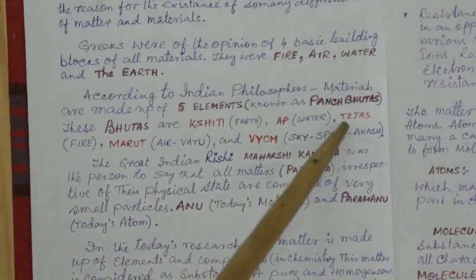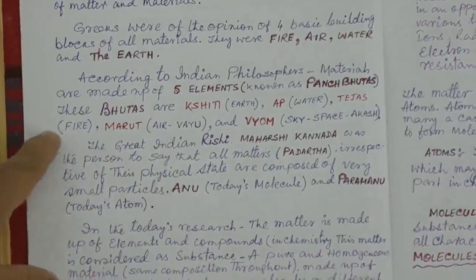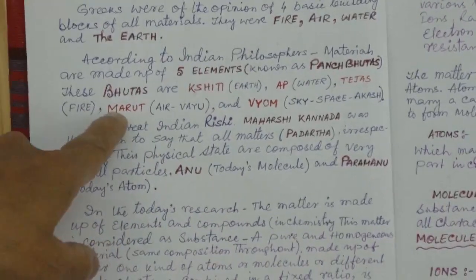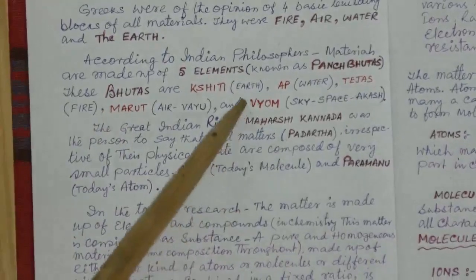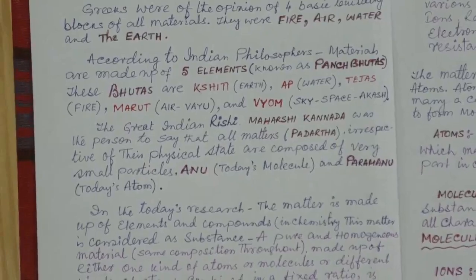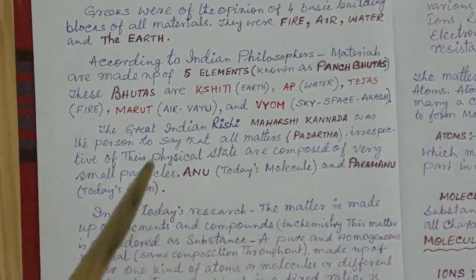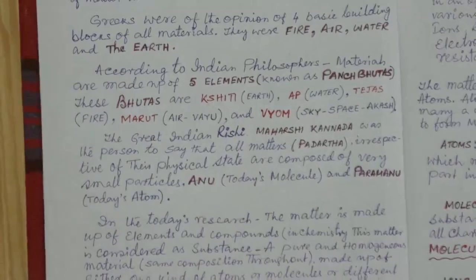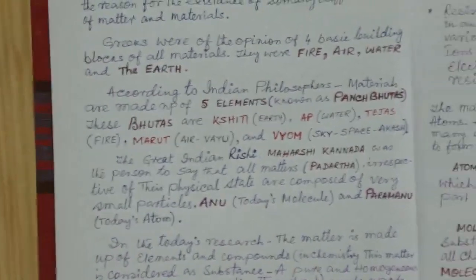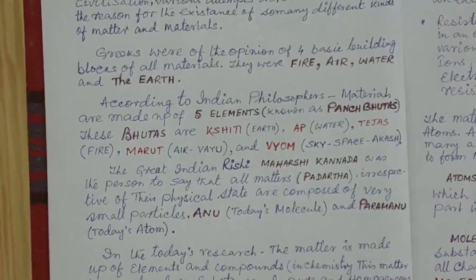Marut means air, Vyom and beyond, the sky, the space we call it Akash. So these were the five elements of anything we see around us, it was considered by the Indian philosophers that time.